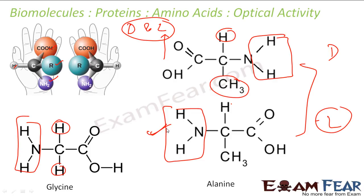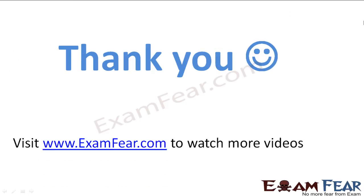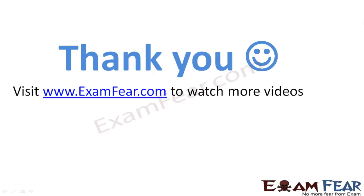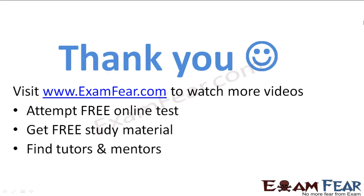All amino acids except glycine show optical activity; they have D and L forms, and most show the L form where NH2 is on the left-hand side. Visit examfier.com to watch more videos, attempt free online tests, get study materials, find tutors and mentors, and much more.